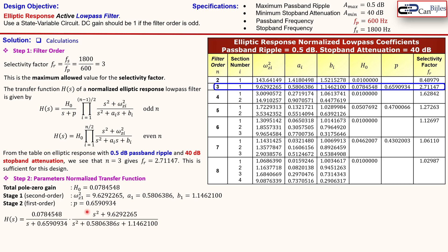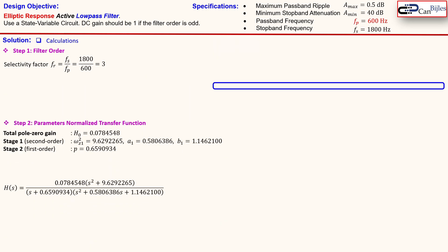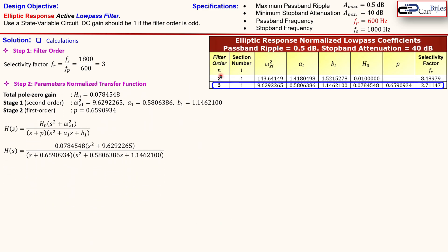Our transfer function can be written as a first-order low pass section times a second-order low pass section, derived from the odd-order transfer function expression. Writing this in compact form and using only the relevant entries and values, we can now proceed to the next step: the frequency scaling factor.